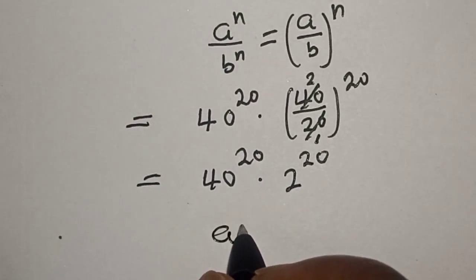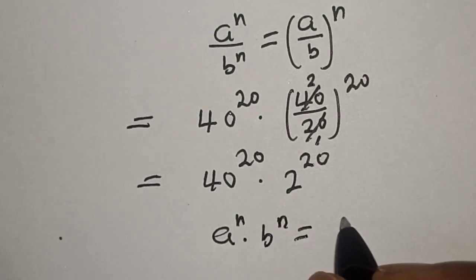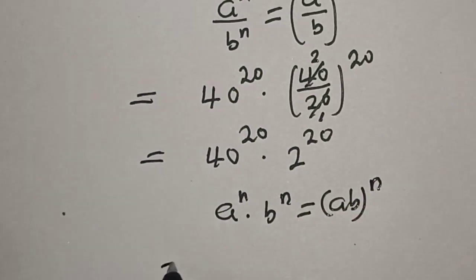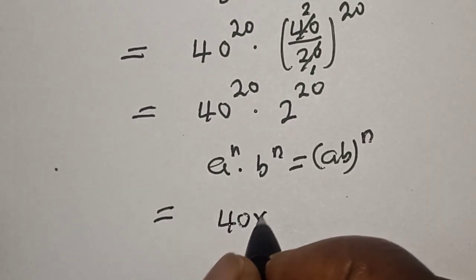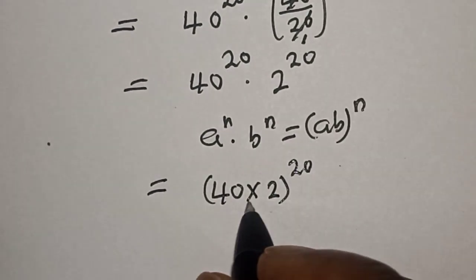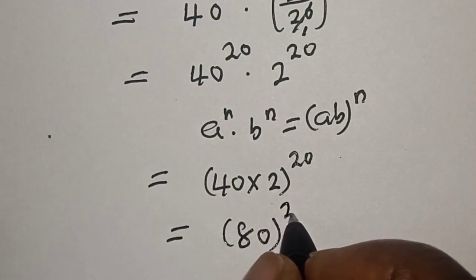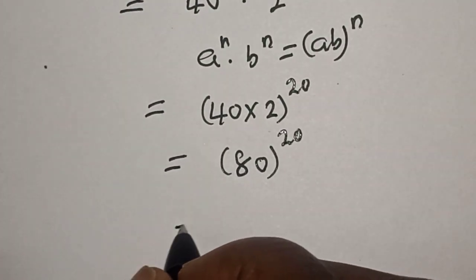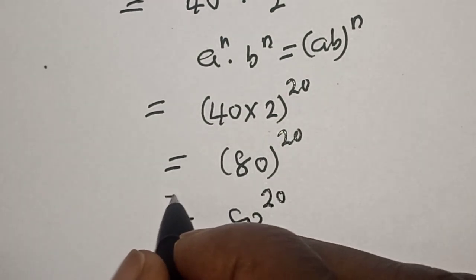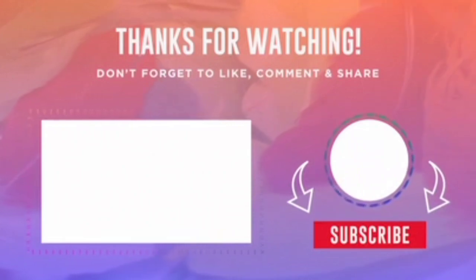Also take note of this rule: a raised to power n multiplied by b raised to power n is equal to ab raised to power n. Applying this, we get 40 times 2 raised to power 20. Since 40 times 2 is 80, this is equal to 80 raised to power 20. Our final answer is 80 raised to power 20. If you enjoyed the class, please don't forget to like, share, comment, and subscribe. Thank you.